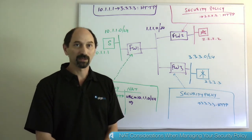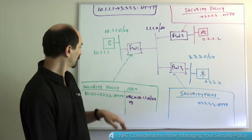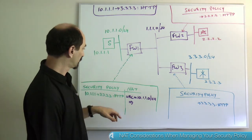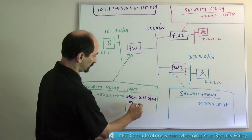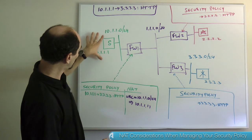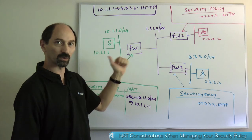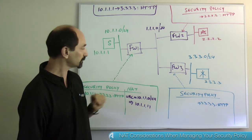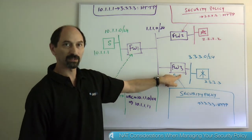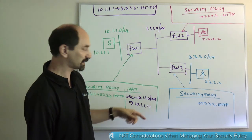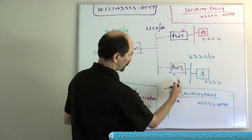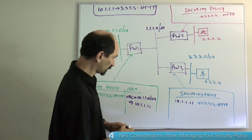But if there is NAT going on in your environment, things get a little more complex. Imagine the simplest scenario: firewall one is configured to do source NATing, hiding the whole subnet 10.1.1.0 behind one particular IP address — let's say 10.1.1.11. So any traffic that comes from the green subnet, as it exits firewall one, the source IP address is going to be translated to 10.1.1.11. If that's the case, you cannot write the rule on the downstream firewall three as requested, because when the traffic reaches firewall three it's going to have the translated IP address in the source. So you have to write the translated address in the source of the rule in firewall three: source 10.1.1.11, destination 3.3.3.3.